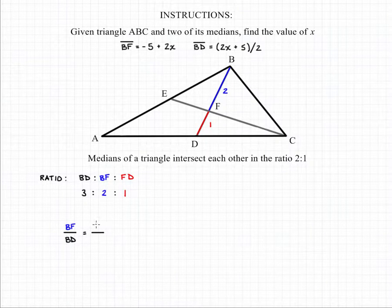Since we're looking for BF and BD in our given information, we want to compare that ratio and substitute in the information that we're given.